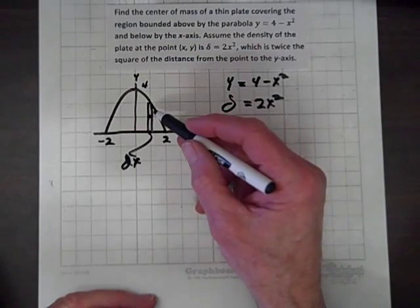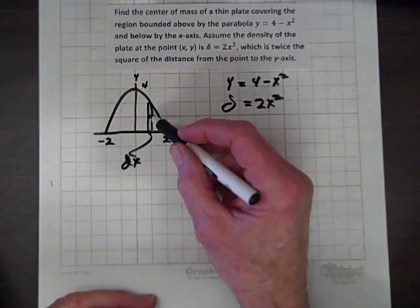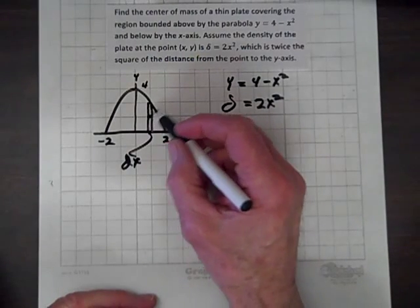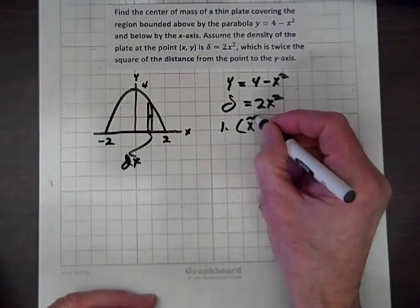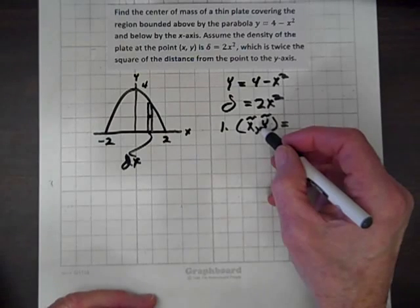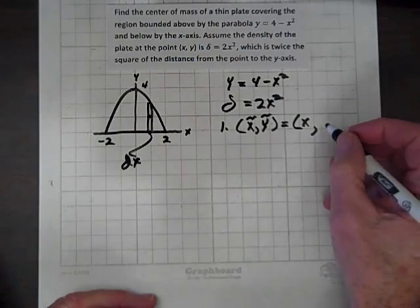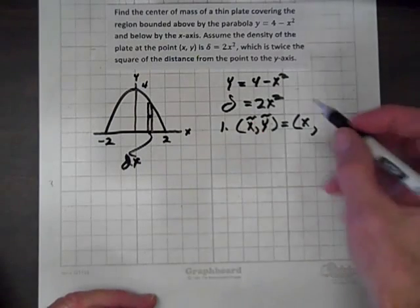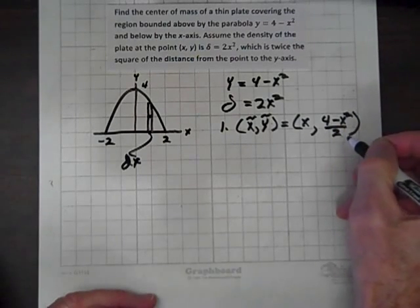Our first task is to identify the center of mass of the strip. We've drawn a strip and placed a dot in the center — that is the center of mass of the strip, and it has the coordinates x-tilde, y-tilde. How far is it from the y-axis? It's x units away. And the distance of that center of mass from the x-axis is 4 minus x squared divided by 2 — it's half the y-value.